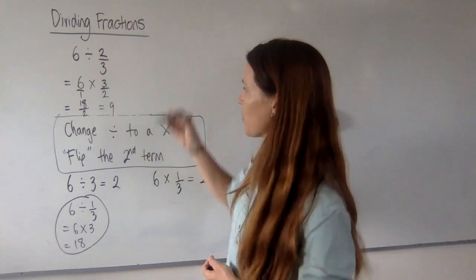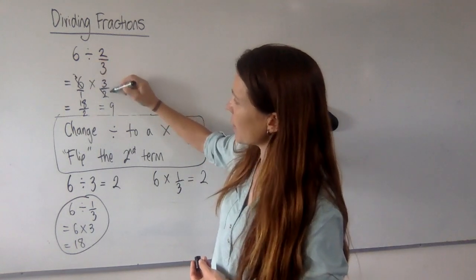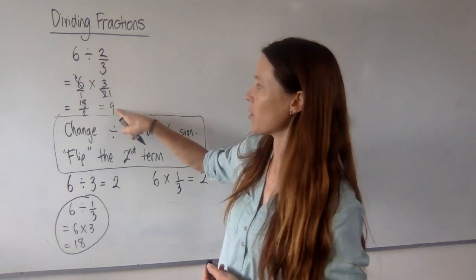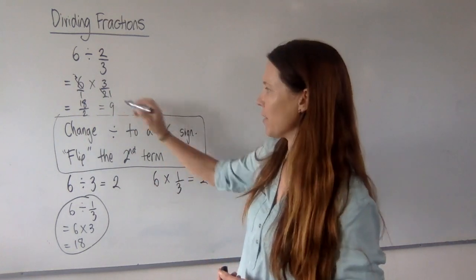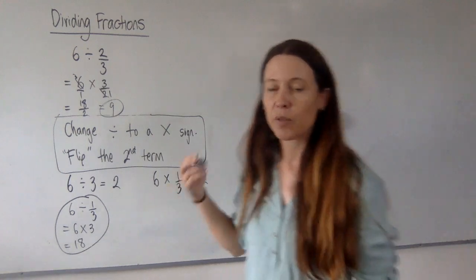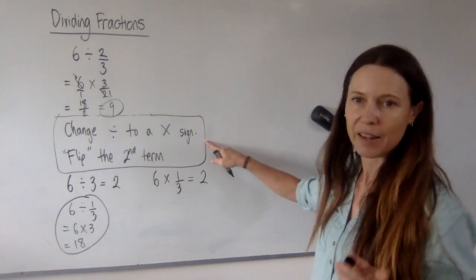Or if we'd have used our method of simplifying first, we could have said divide this in half, divide this in half, and now we've got 3 times 3 on the top to be 9. And 1 times 1 is 1 on the bottom, 9 over 1. Either way, it's 9. So we really should be quite convinced now that this hack is going to work every time.